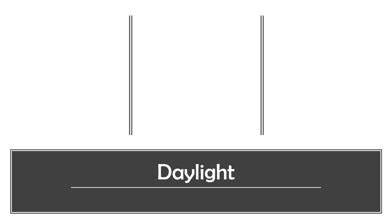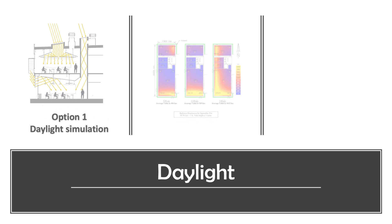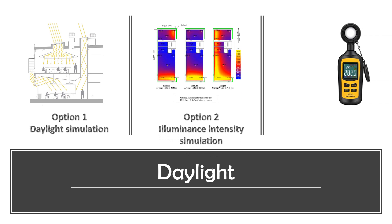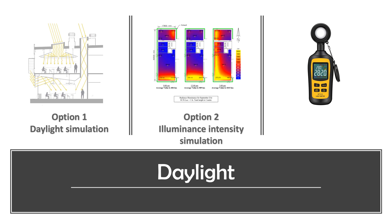You can earn up to three points for providing daylighting. The intent is to connect people to the outdoors and reduce use of electrical lighting. The requirement is to provide manual or automatic glare control devices for occupied spaces, and you can choose one of three options. Option one is to run a computer simulation annually to check the daylight for each of the regularly occupied spaces. You can get one point for daylighting at 40% of the floor area, two points for 55%, and three points for 75%.